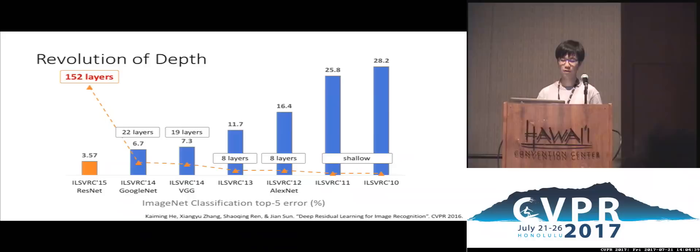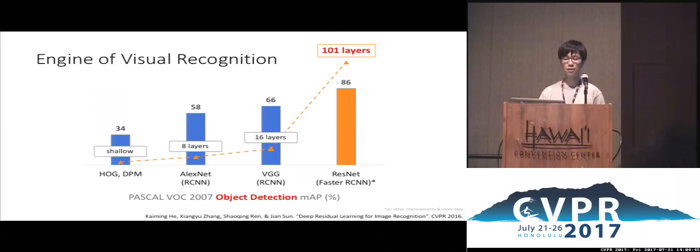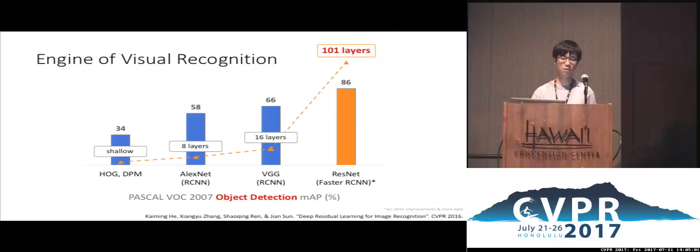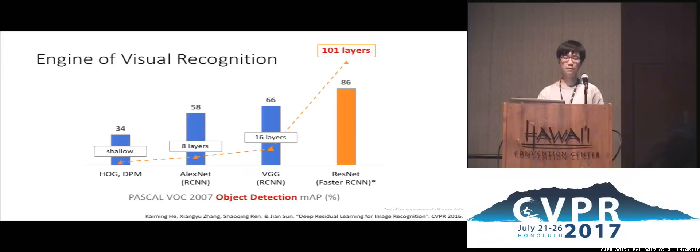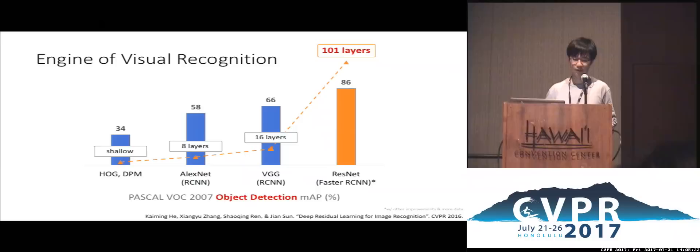These deep neural networks are also the engines of visual recognition. Object detection is a good benchmark for this. In Pascal VOC 2007, the most popular shallow model achieved about 34% MAP. After AlexNet was introduced together with the region-based convolutional neural network (RCNN), MAP improved by 20%. Replacing features from AlexNet to VGG to ResNet showed another very big improvement on this challenging object detection task.